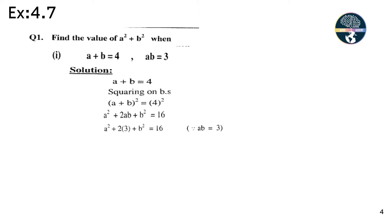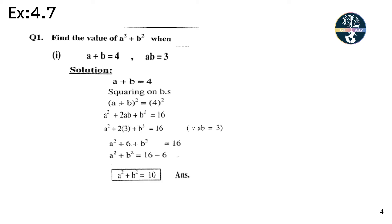Putting the value of ab = 3: a² + 2(3) + b² = 16, so a² + 6 + b² = 16. Therefore a² + b² = 16 - 6 = 10. The value of a² + b² is 10.